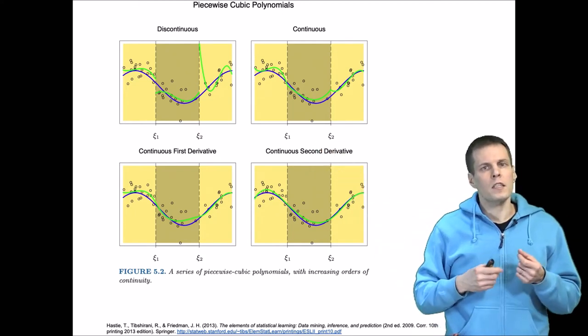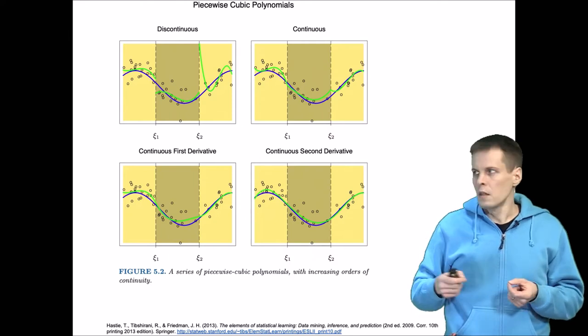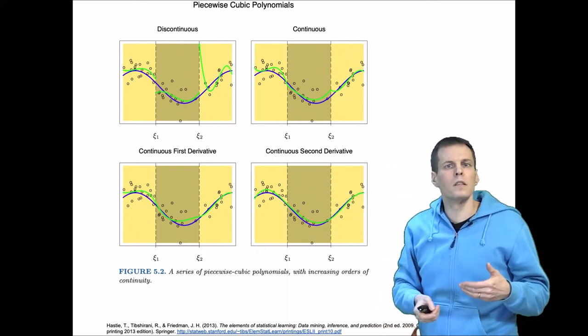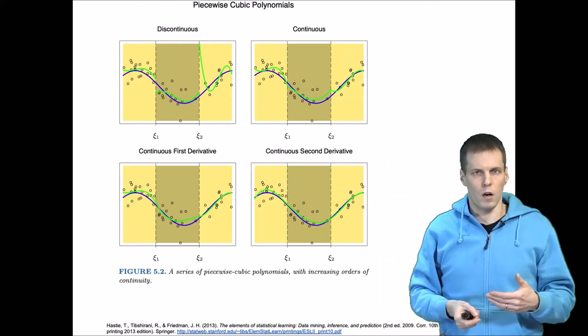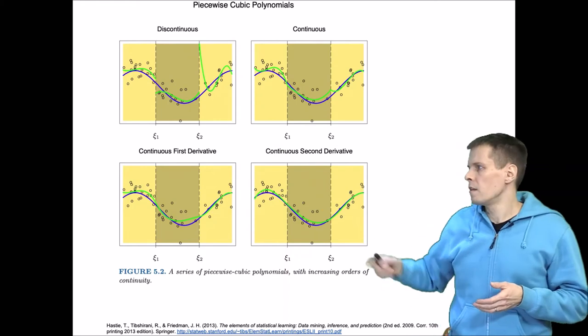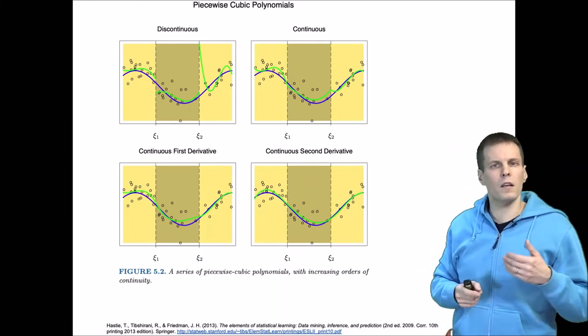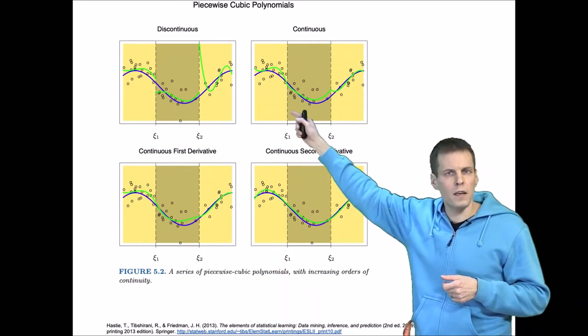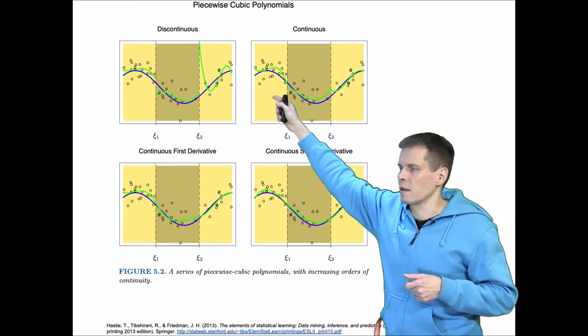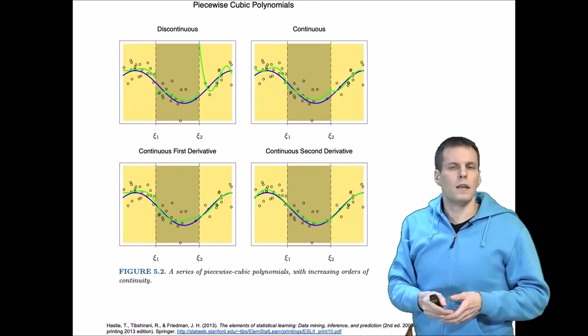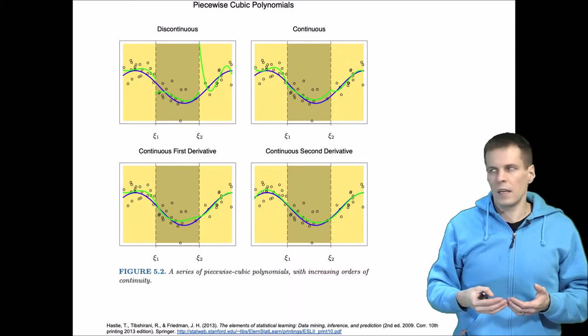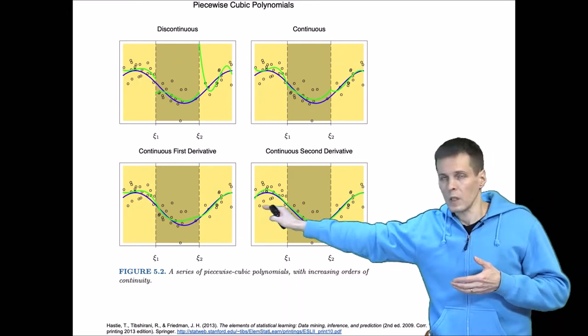And we can adjust the spline to have different degrees of continuity. So here in the first case this is discontinuous. So we're just estimating a separate different regression model with a third degree polynomial of x for each part of the data. Then in the continuous one we are estimating two parameters less, which means that we constrain the intercept for the second part to be whatever is the other point here where the first part ends. And then we can add even more constraints to the model, estimate less and less, and that gives us smoother and smoother plots.